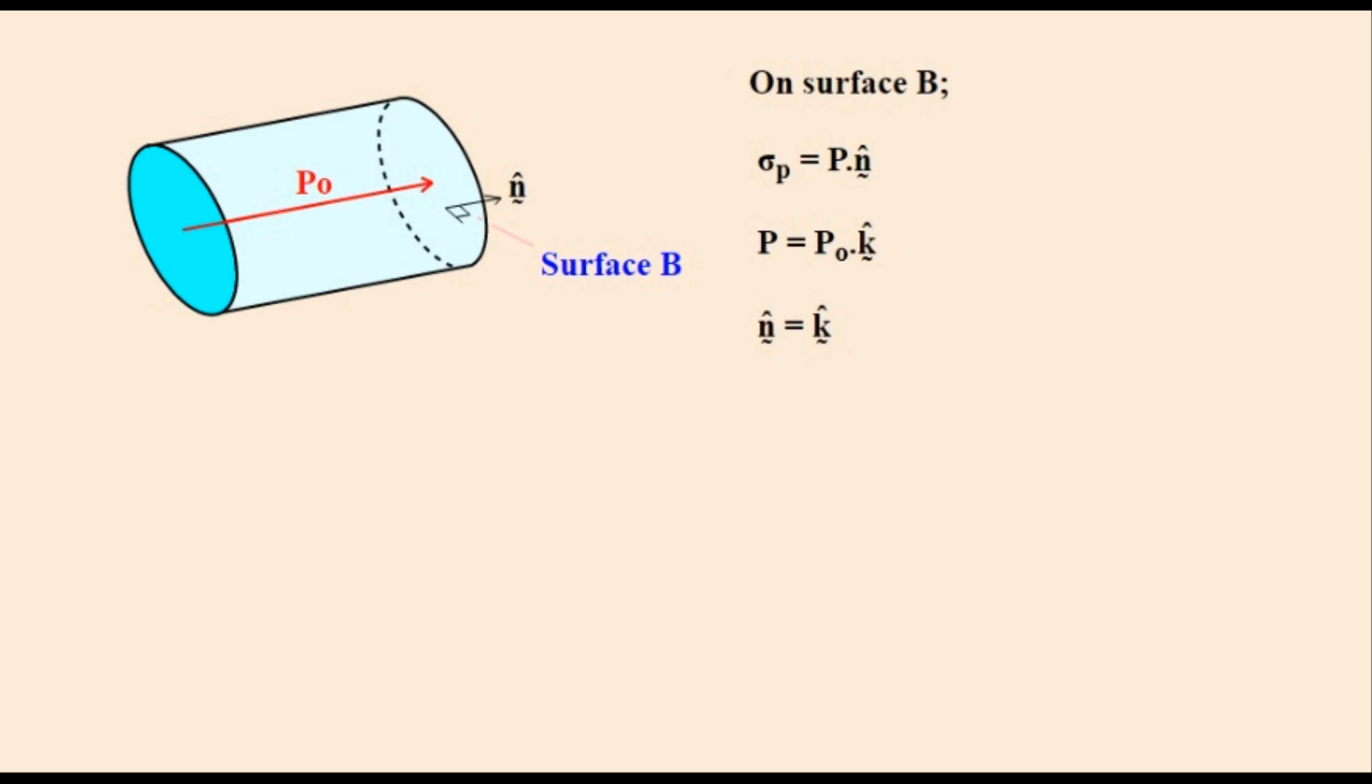On surface B the other end of the cylinder hidden from view the calculation is the same but the unit normal vector of B is positive unit K. A and B face in opposite directions and their surface normal vectors are opposite to each other. Plugging these two values into the first equation gives this expression which gives this answer. The two K unit vectors multiply together to make 1 leaving the answer to be P0.